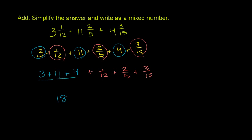This will be trickier because when we add fractions, we have to have the same denominator. We need to make all three of these have the same denominator, which has to be the least common multiple of 12 and 5 and 15.